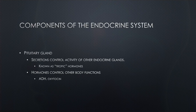These are known as tropic hormones. You've got your adrenocorticotropic hormone and growth hormone. There are two other hormones that control other body functions, such as ADH — antidiuretic hormone — and oxytocin.